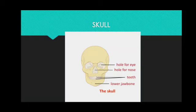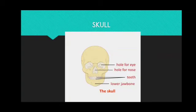The skull is very important because it protects your brain from being harmed. It also supports the sensory organs such as the eyes, ears, and nose, and provides spaces for your teeth. You can see in the diagram on your screen that there is a space for the eye, a hole for the nose, spaces for the teeth — thus it supports the sensory organs.